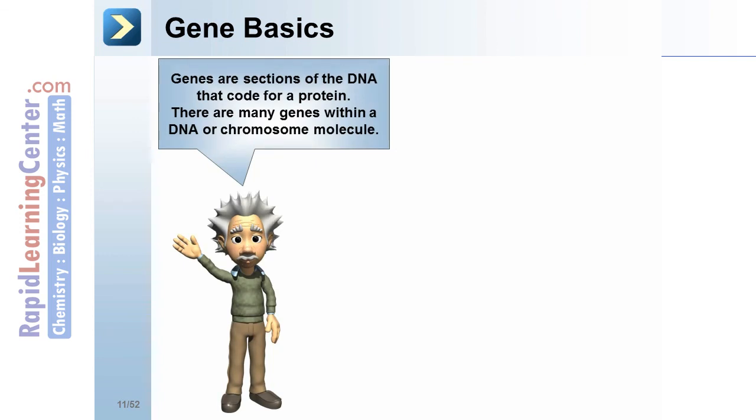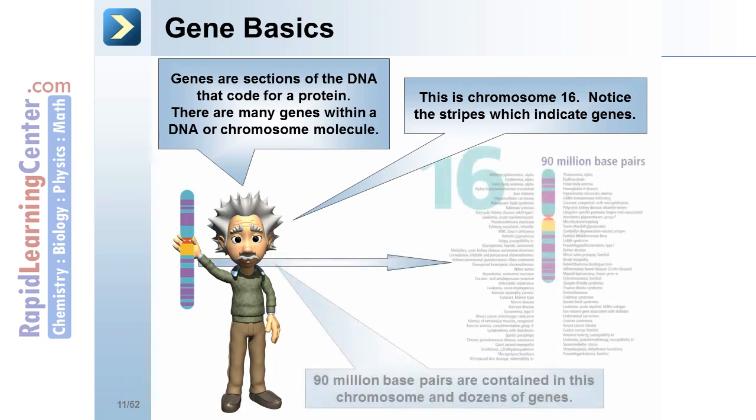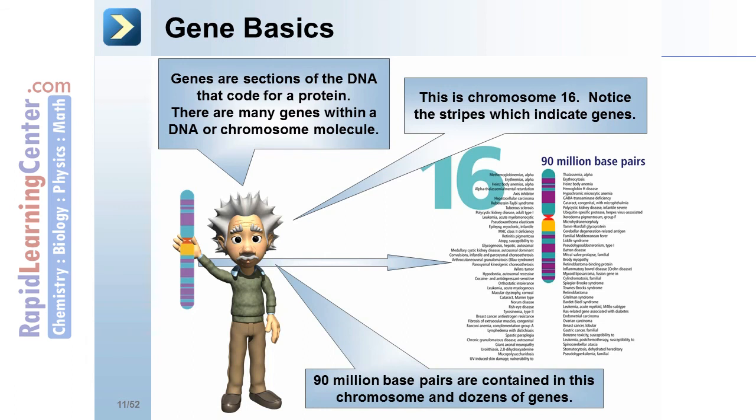Gene Basics. Genes are sections of the DNA that code for a protein. There are many genes within a DNA or chromosome molecule. This is the human chromosome number 16. Notice the stripes. These indicate genes. 90 million base pairs are contained in this chromosome and dozens of genes.